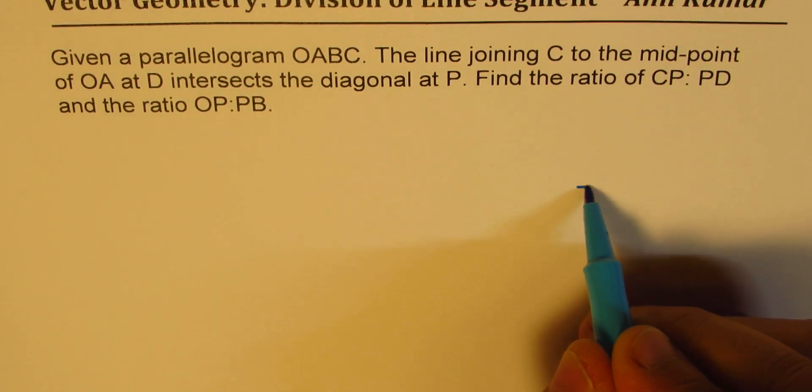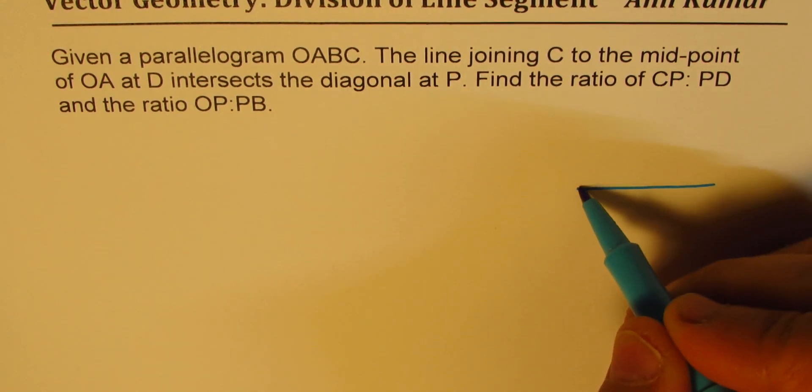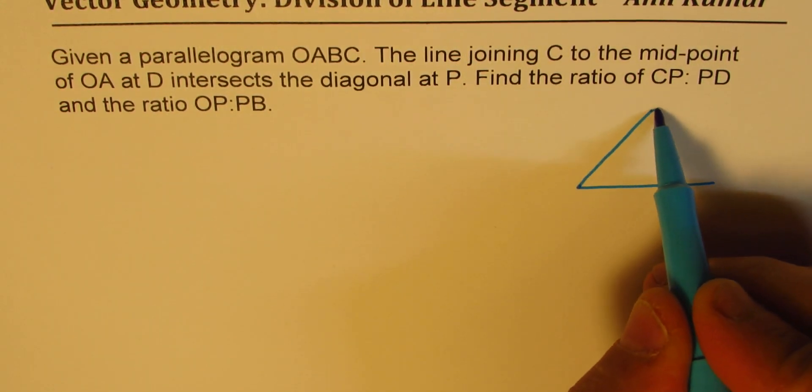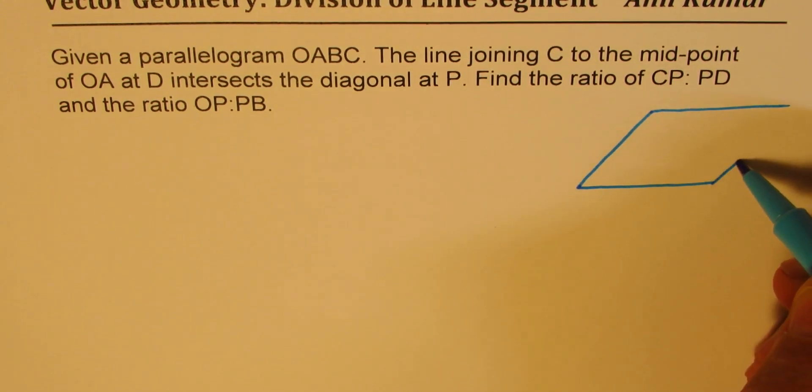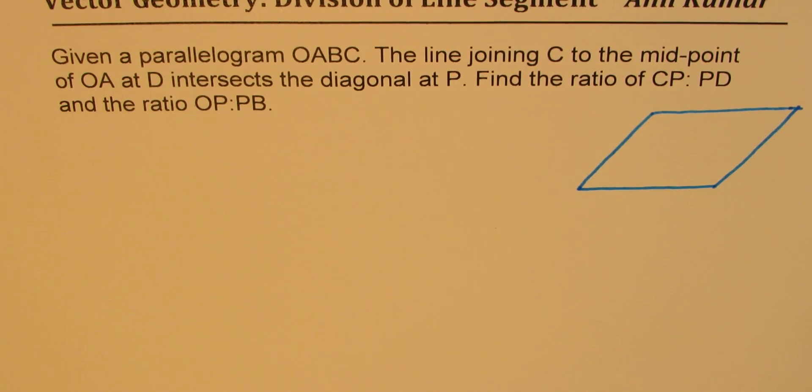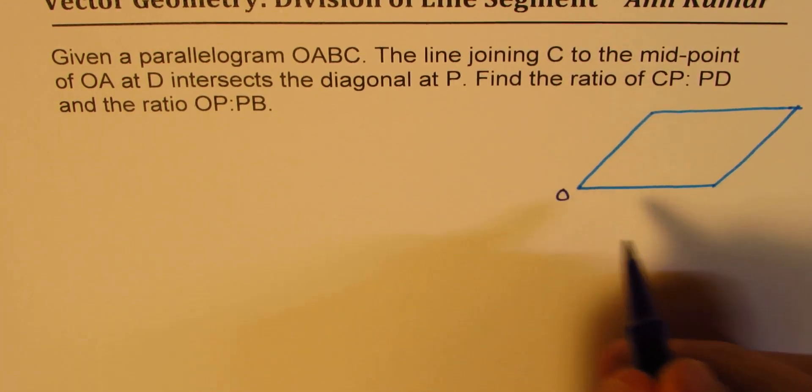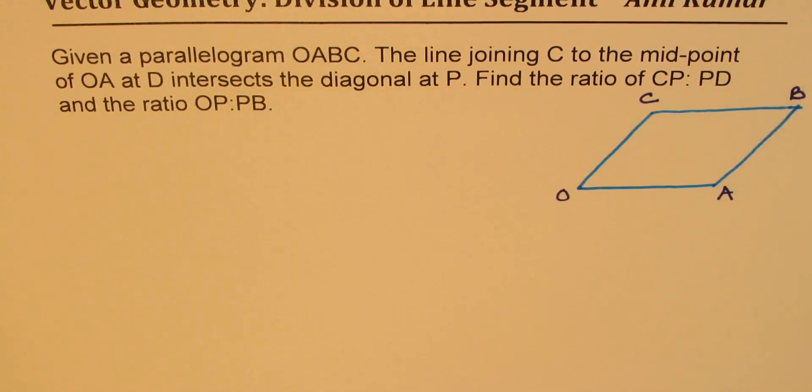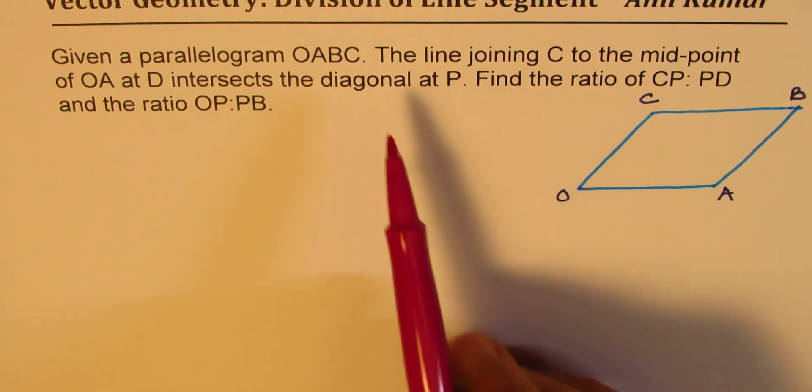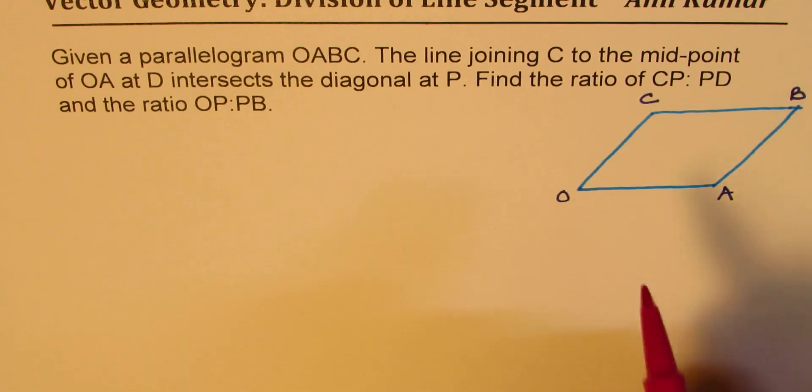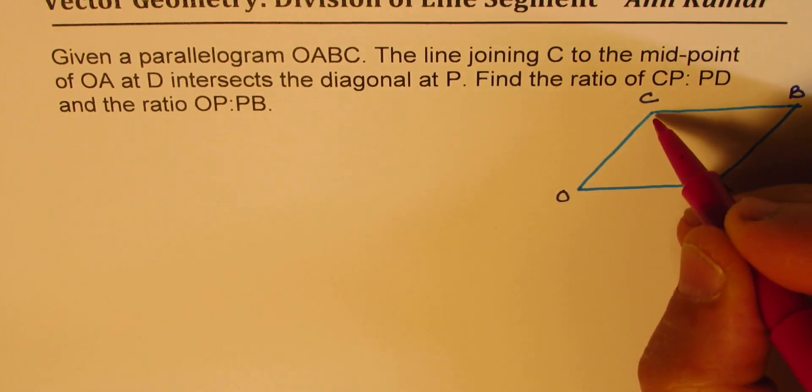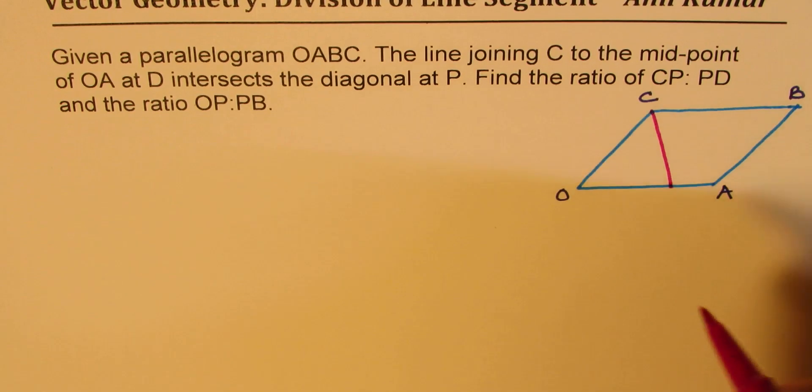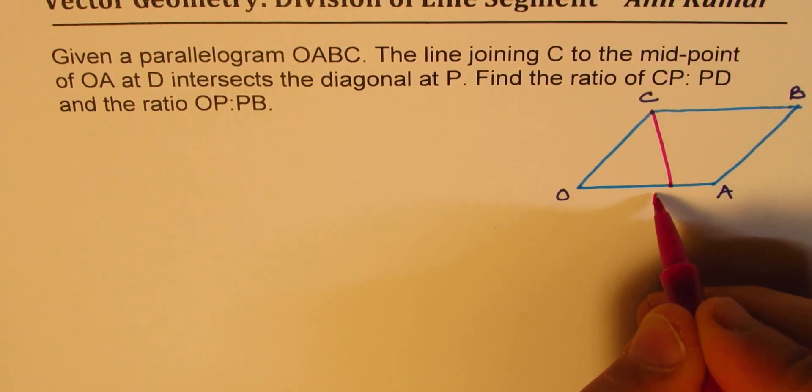So let me sketch one. So this is the parallelogram. And the sides are OABC. And we are given that the line joining C to the midpoint of OA. So let this be the midpoint of OA. Let's join this. Doesn't really look like it, but we'll call this as D.